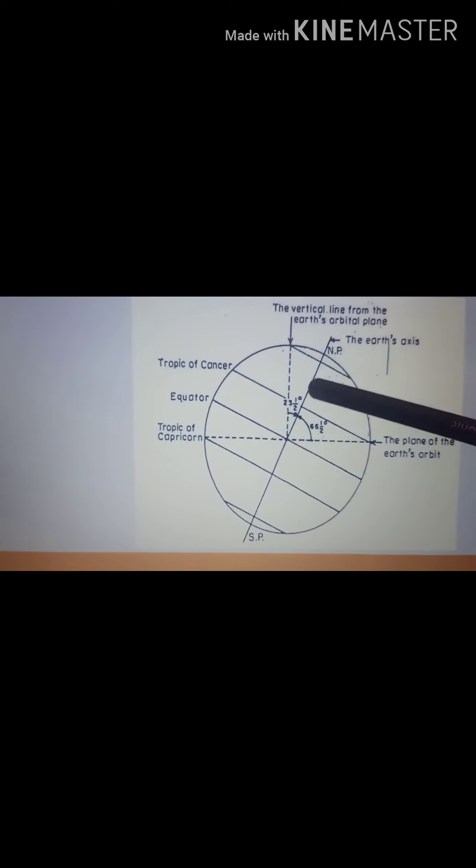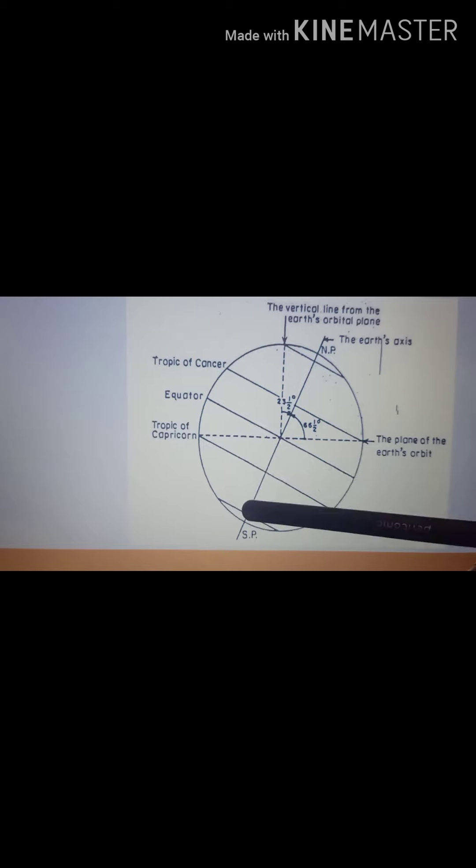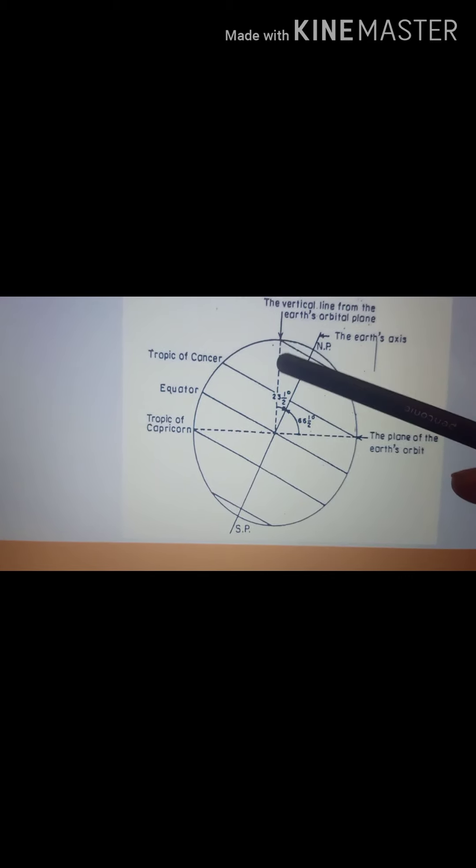Now, the axis is not a straight line but it is inclined as you can see. It makes an angle of 23.5 degree to the vertical. This vertical is actually the vertical line from the earth's orbital plane.